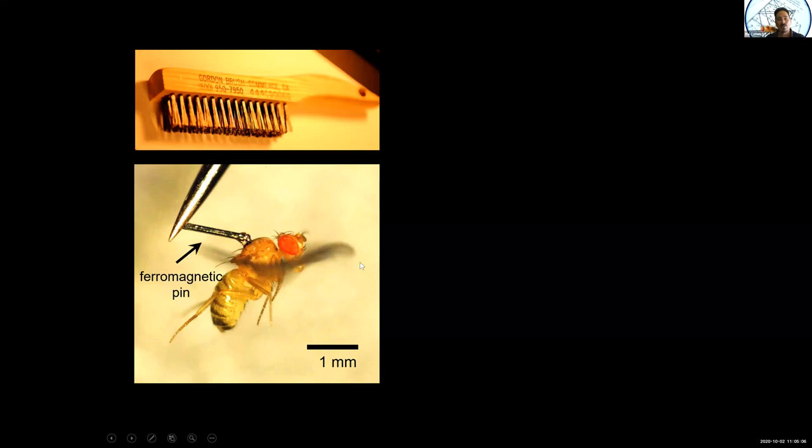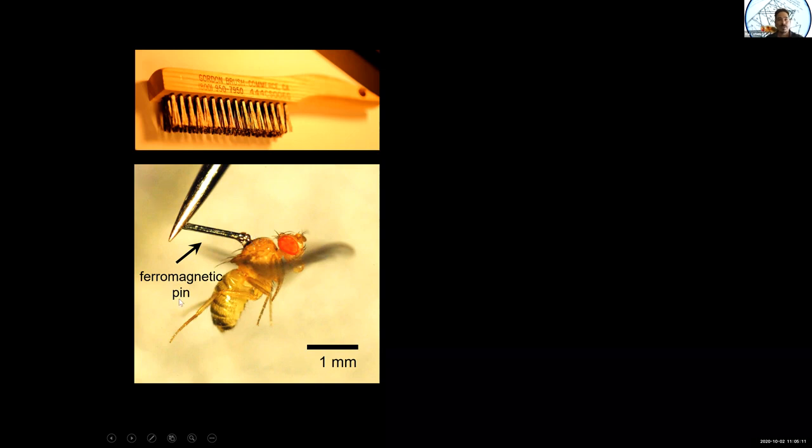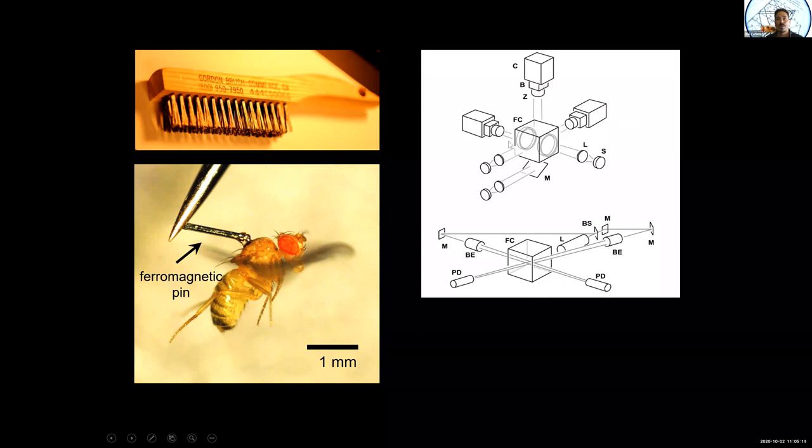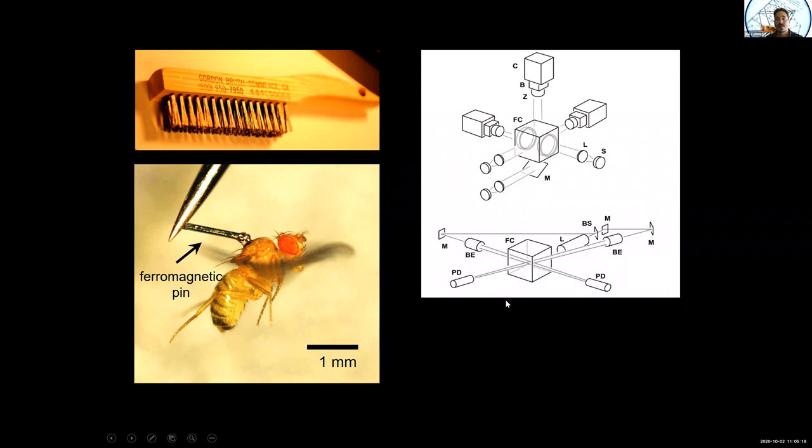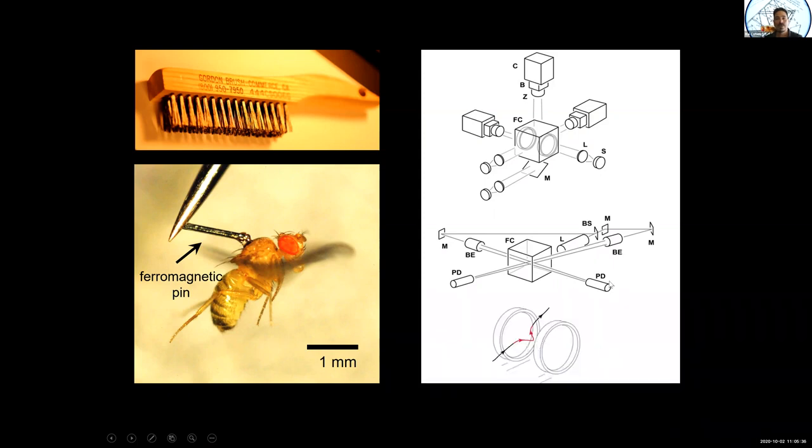That's the main thing that I want to tell you about today is how we're going about studying this amazing reflexive action. The story starts with a brilliant experiment that my student Leif Ristroff did a few years back. What he noticed was that if you take this brush from the Gordon brush company and you take a little clipping, you can glue that little clipping to the back of the fly. The fly is fine, it's still flapping its wings, no problem. But the thing that's nice about this clipping is it's magnetic.